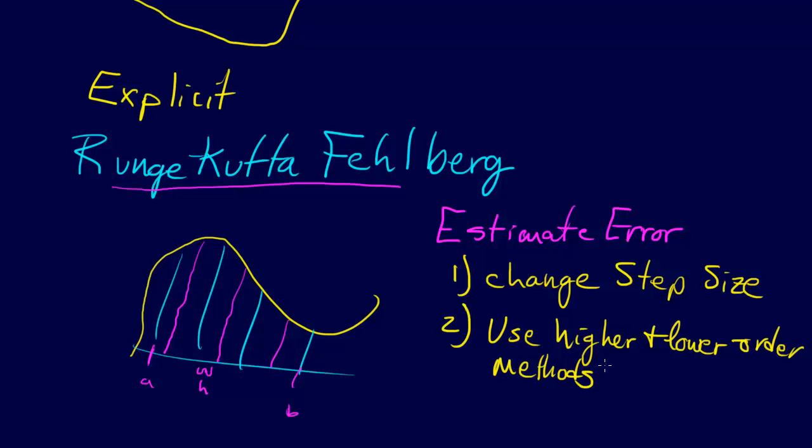In other words, combine higher and lower order methods. In other words, let's say we fit a fourth order Runge-Kutta method, and we integrate with a fourth order Runge-Kutta method, and then we do the integration for that segment again with a fifth order Runge-Kutta method.